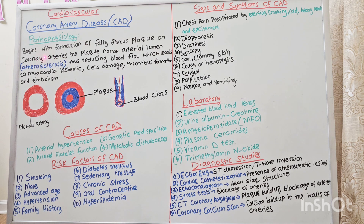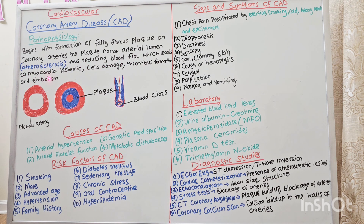Pathophysiology begins with formation of fatty plaque on the coronary artery. The plaque narrows the arterial lumen, which is called atherosclerosis, thus reducing blood flow, which leads to myocardial ischemia, cell damage, thrombus formation, and embolism.